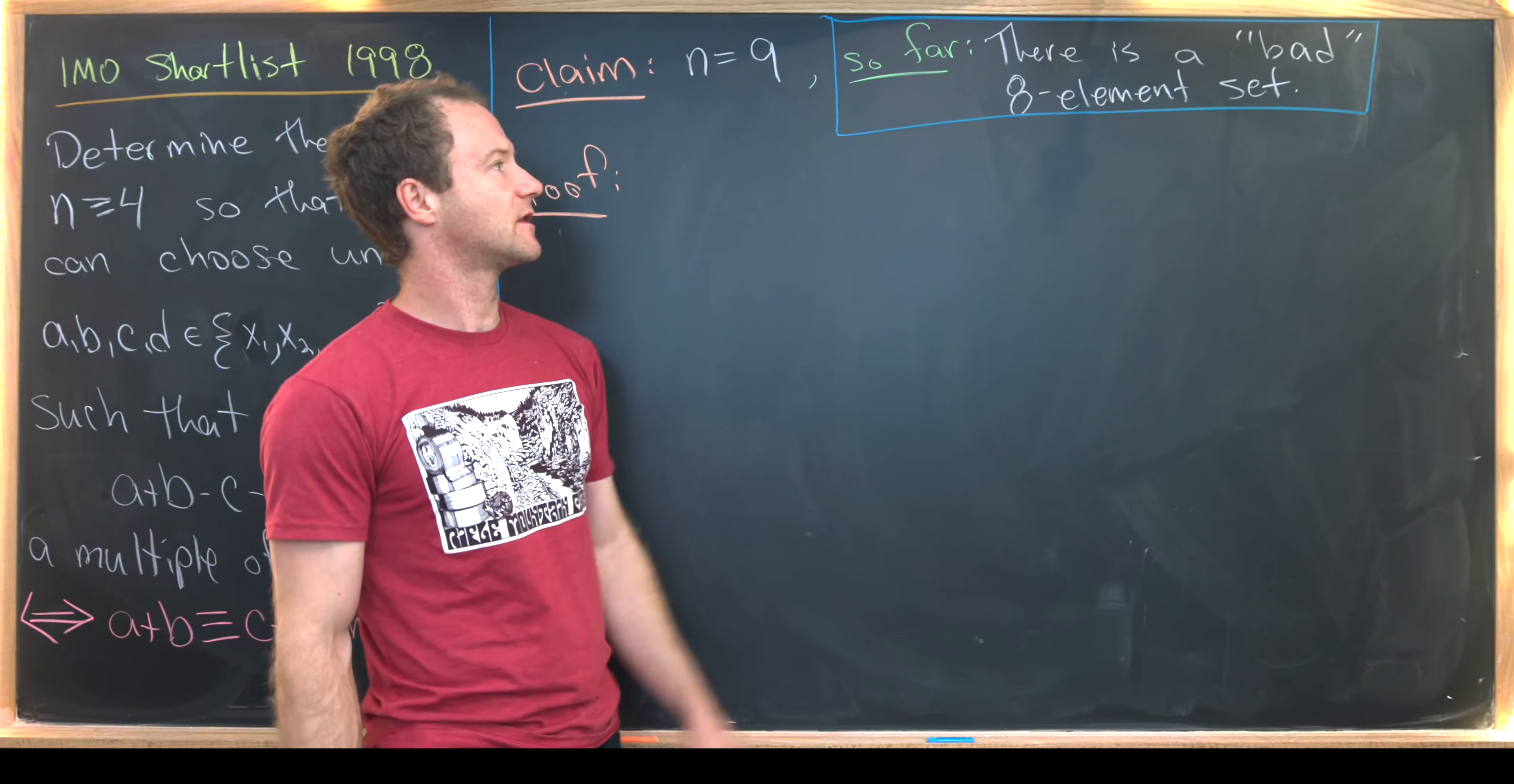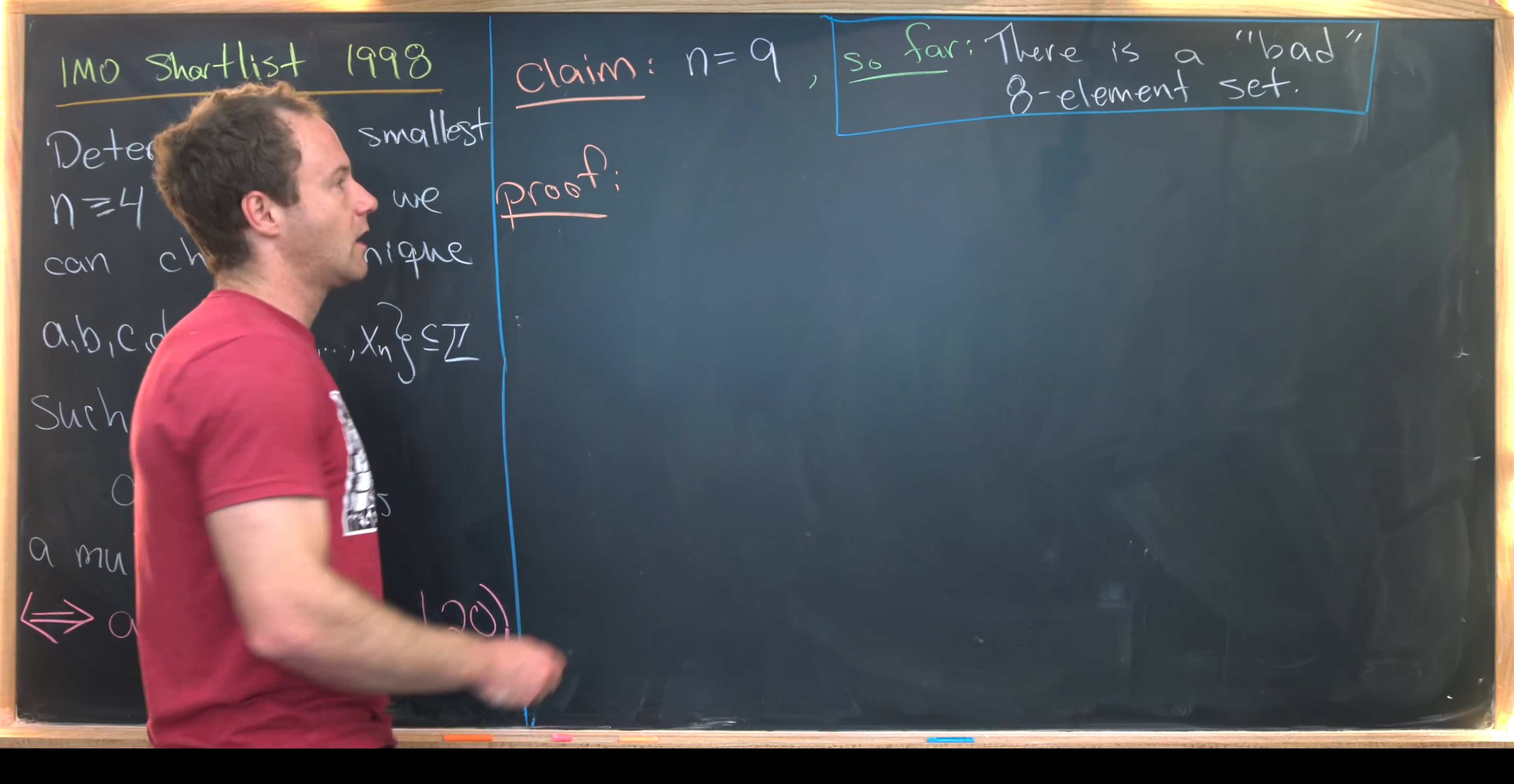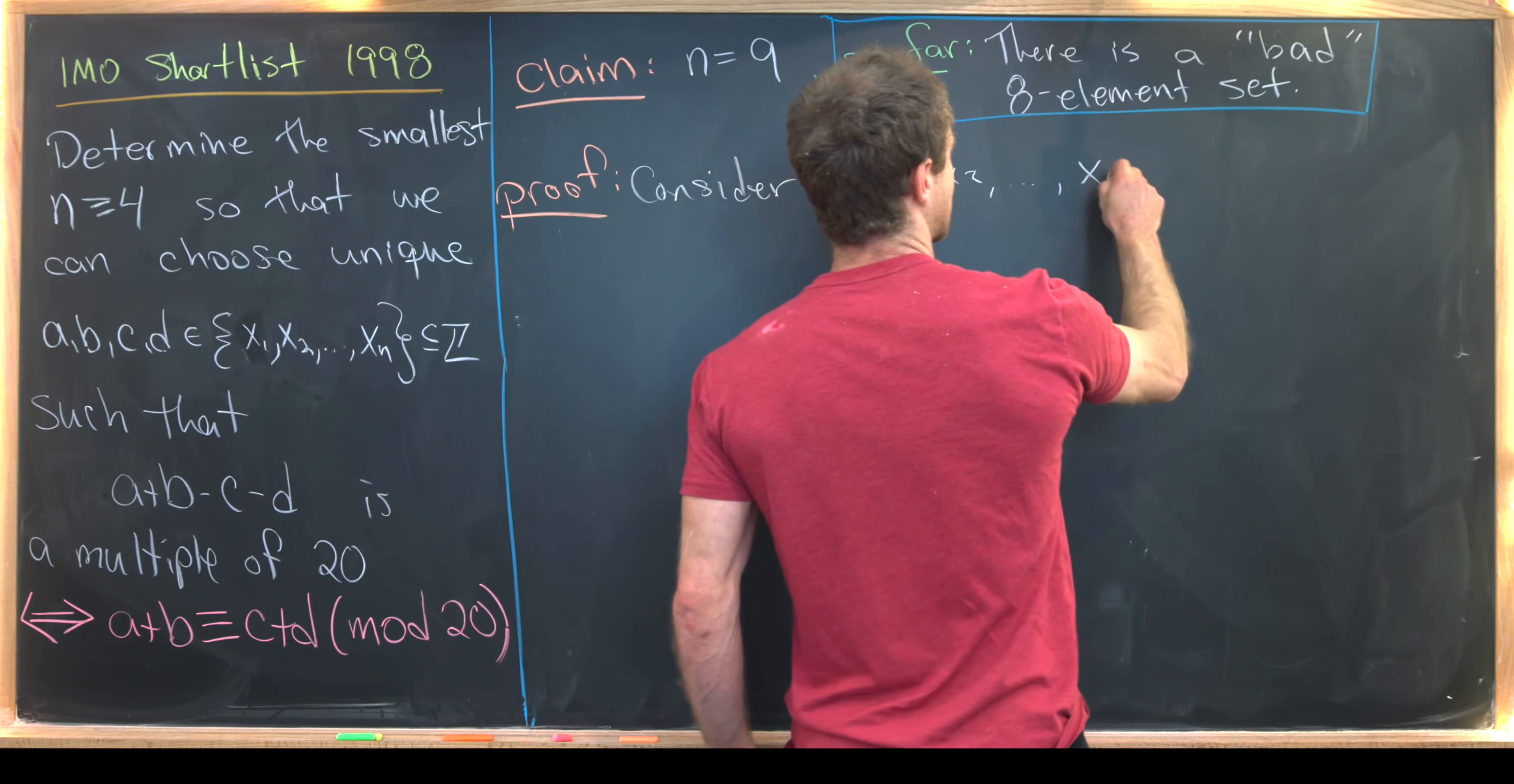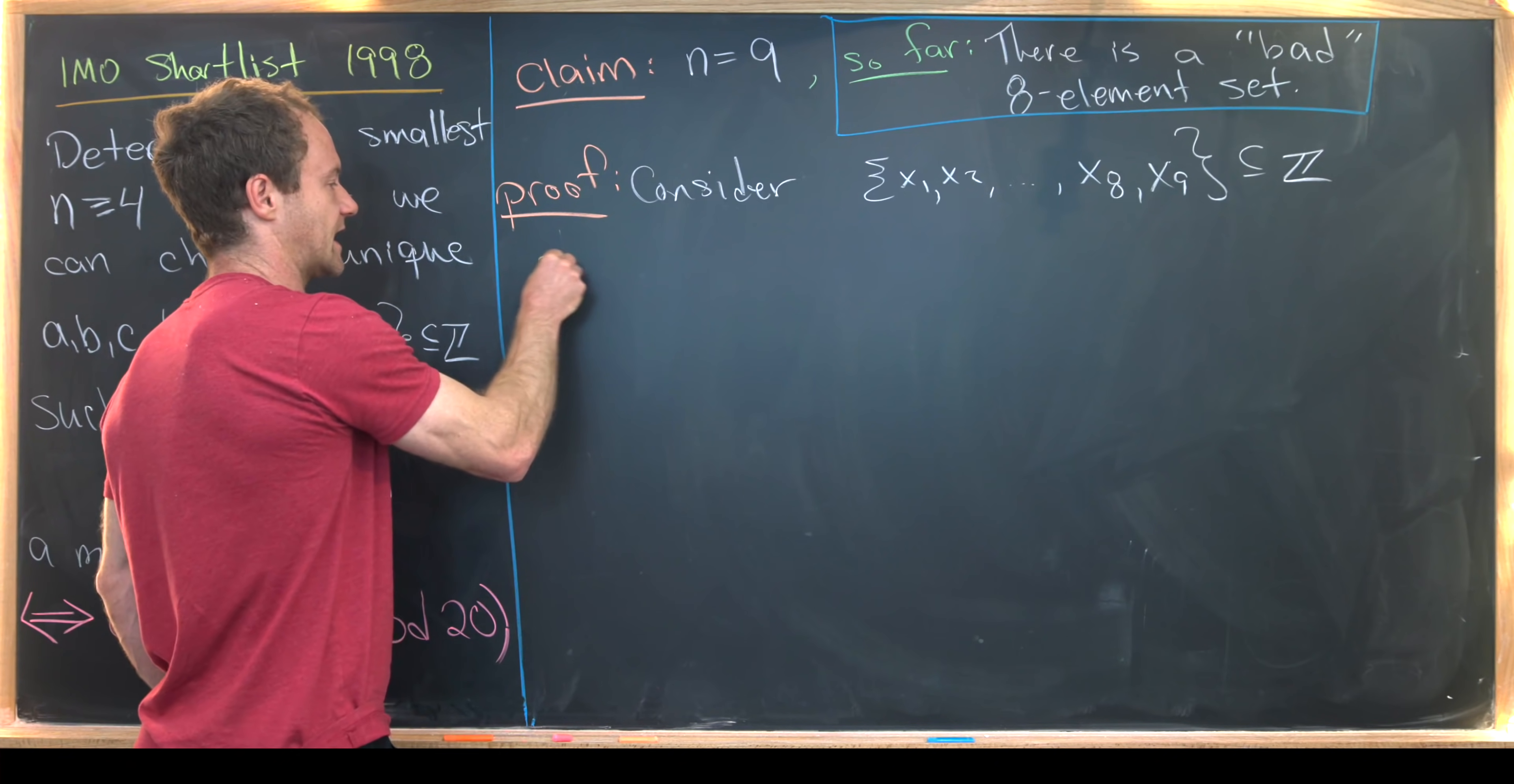Okay, and I want to point out that on the last board, we proved that there is a bad eight element set. And what I mean by a bad eight element set is an eight element set that does not satisfy this property over here. Okay, so let's maybe go ahead and consider an arbitrary nine element set. We'll call it x1, x2, all the way up to x8 and x9. So that's a subset of integers as needed. Okay, now there are two cases built into this that are important to look at.